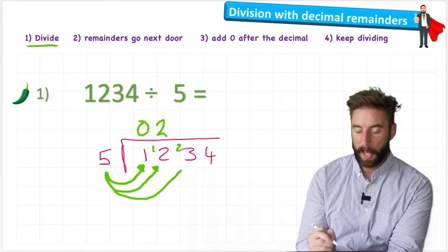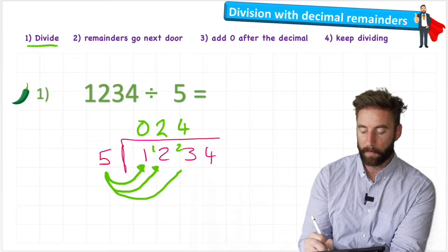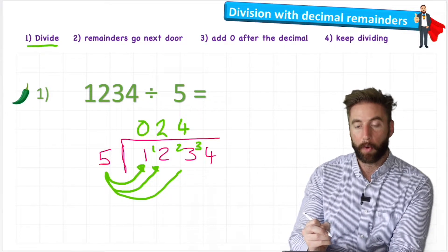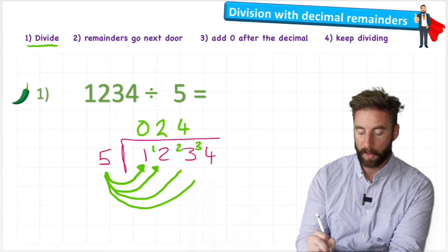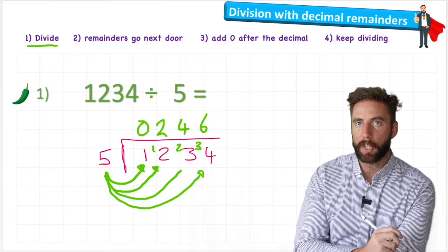Now I can ask how many fives are there in 23? Well, I have four and this time three remainder. And my final question says, how many fives are there in 34? Well, there's six, but here's where we're going to do something differently.